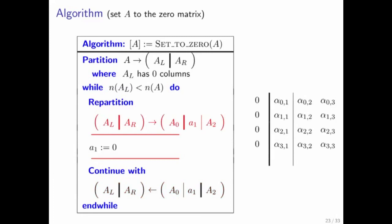We go back to the top, we expose another column, set it to zero, we move on. Expose another column, set it to zero, and we move on. And then the final column, set it to zero, and we're done.